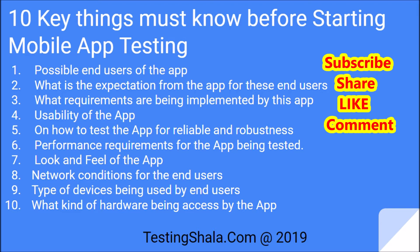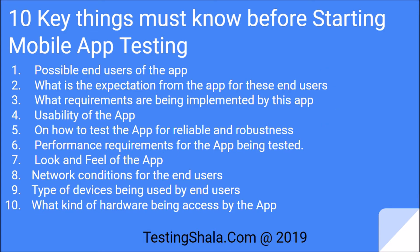The last point is the kind of hardware being accessed by the app — for example, whether the app can access the camera, sensors, GPS, battery, or other hardware available on the device. Next time you do mobile app testing, remember these 10 items.